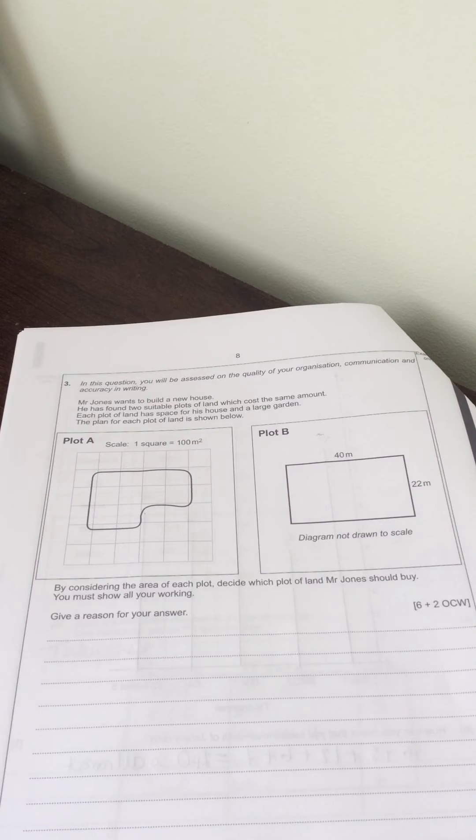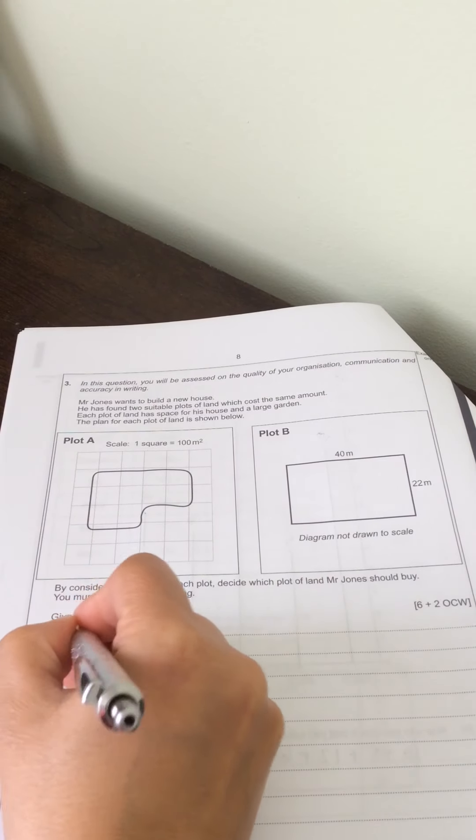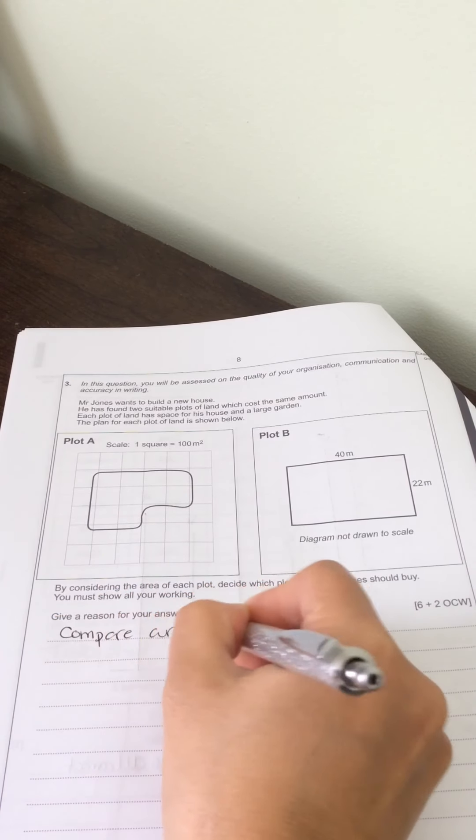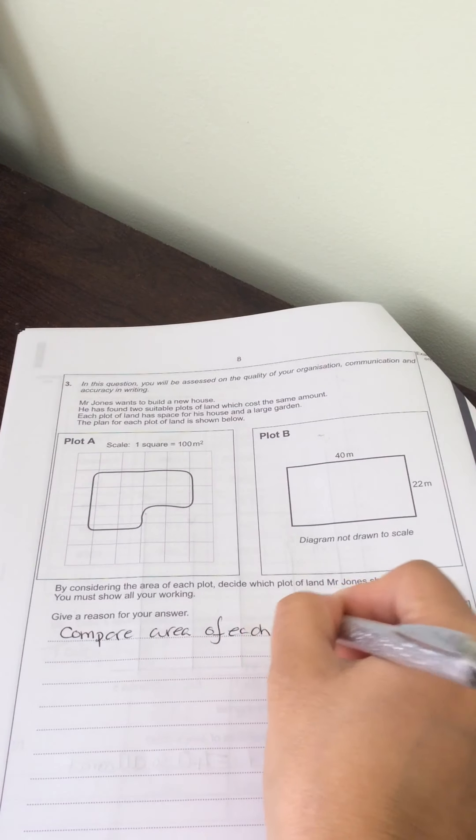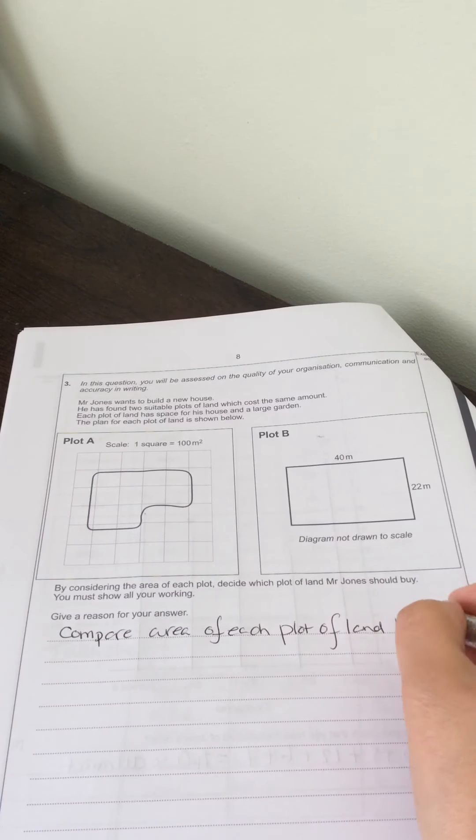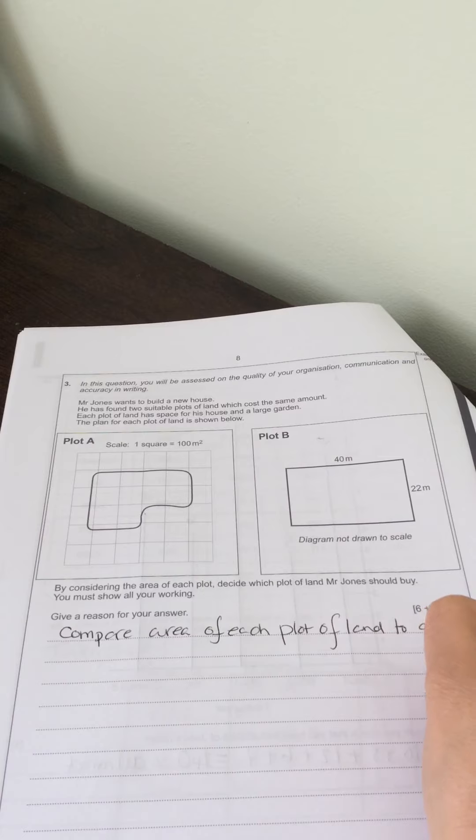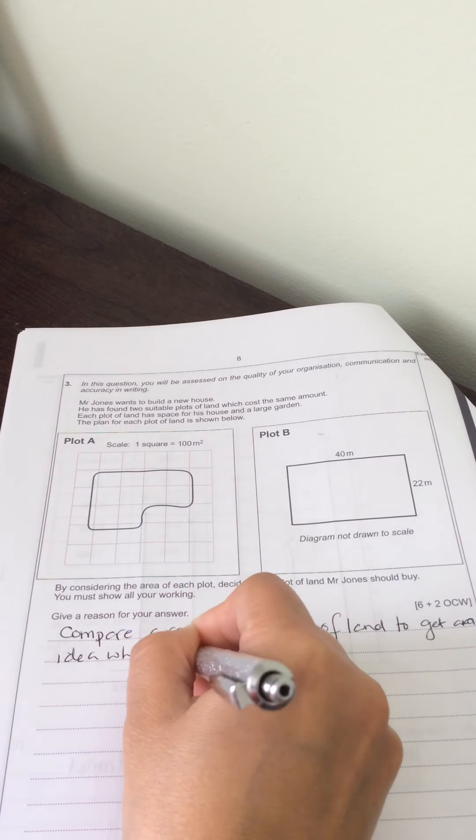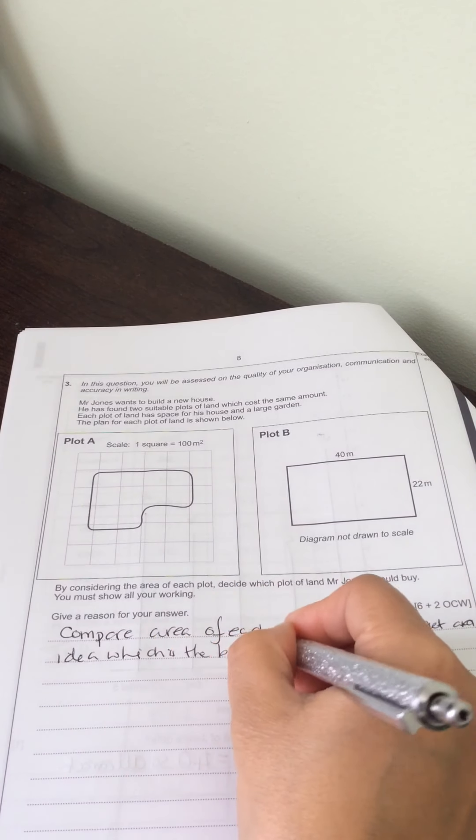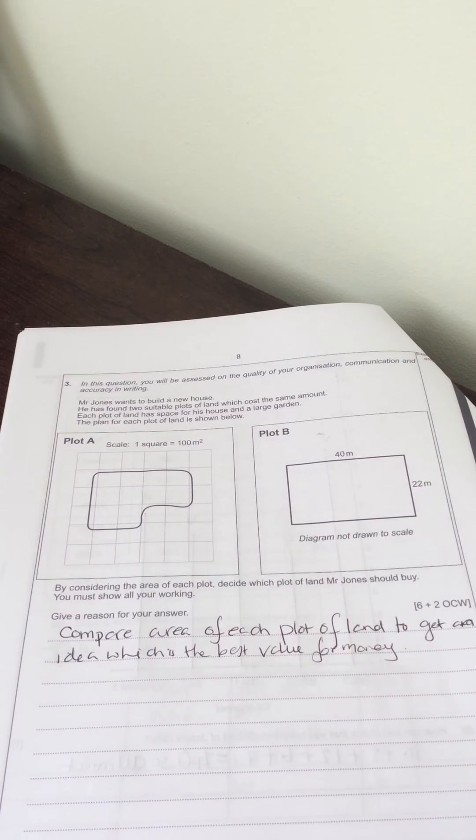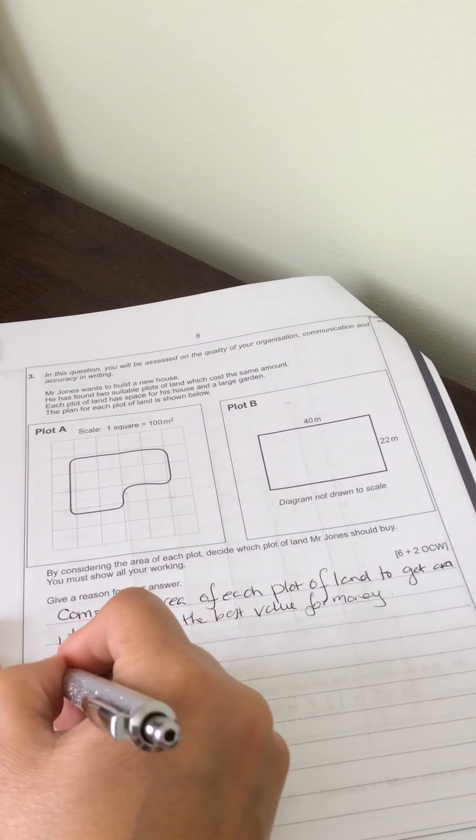So we're going to work out, that's where we're going to start. So we're going to compare the area of each plot of land to get an idea which is the best value. Now we know they're exactly the same price so if we go for the one with the bigger area that would work. So area for plot A.